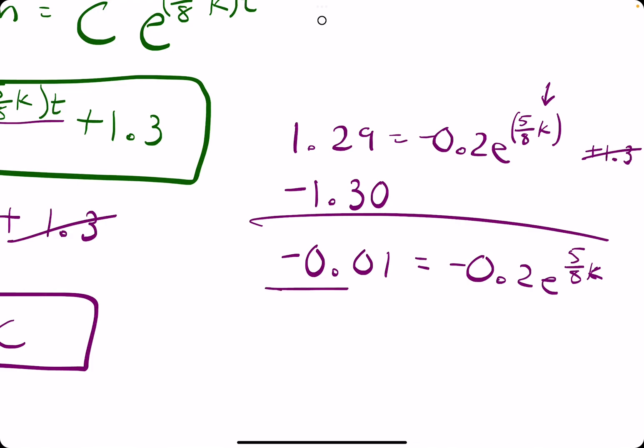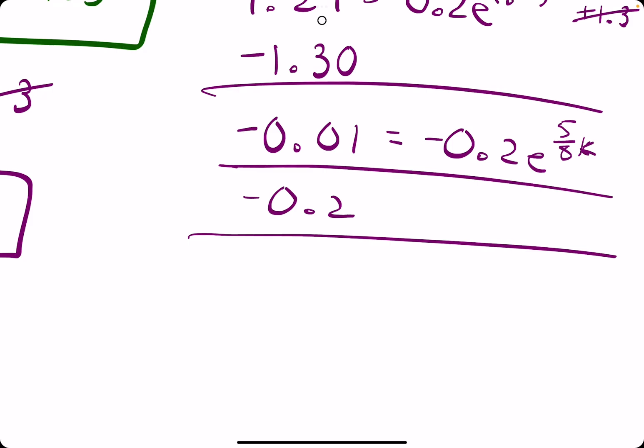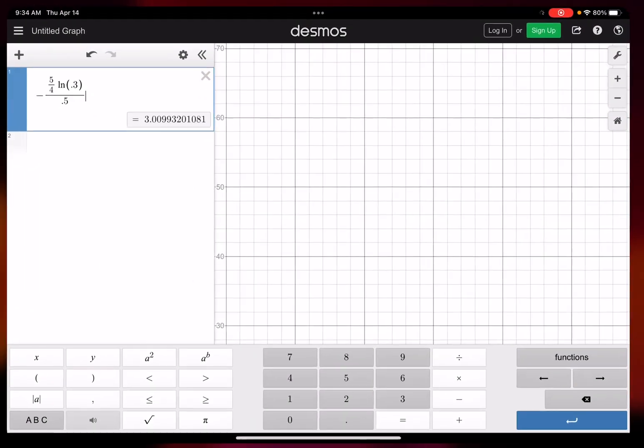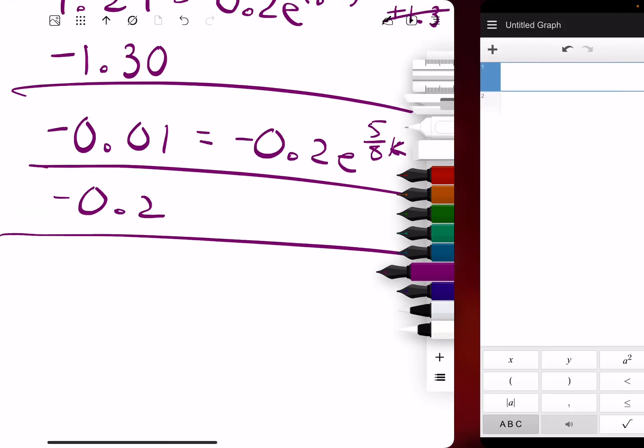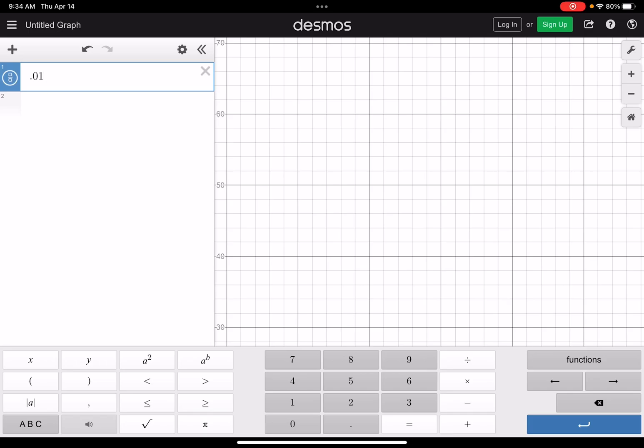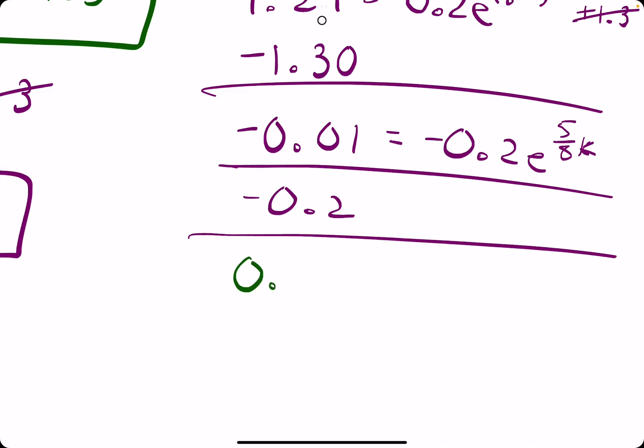And then dividing by negative 0.2 would give us, it might actually make the value larger, maybe 0.05 or something. So, if we have negative 0.01 divided by negative 0.2, we get 0.05, and it would be positive because we have two negatives being divided.